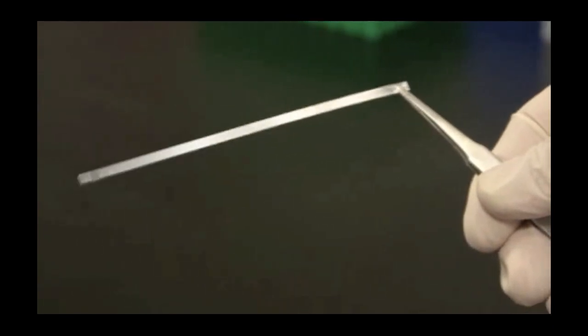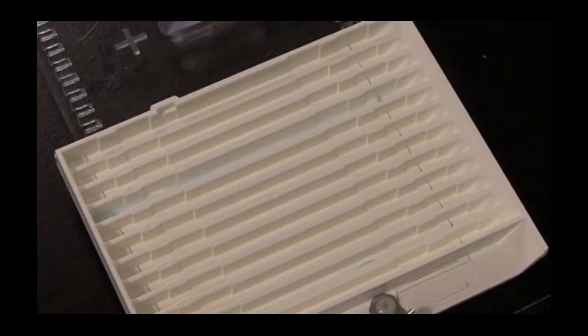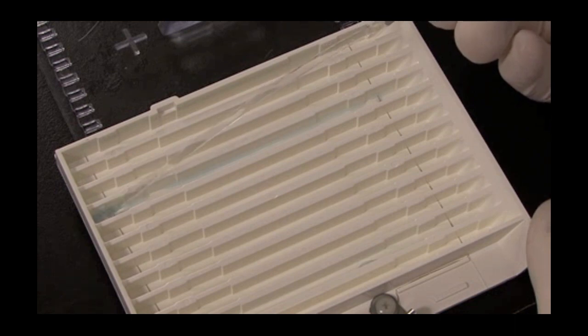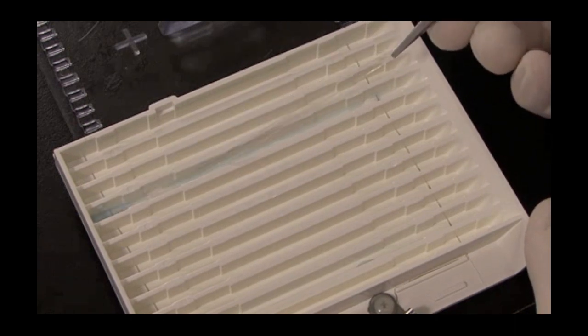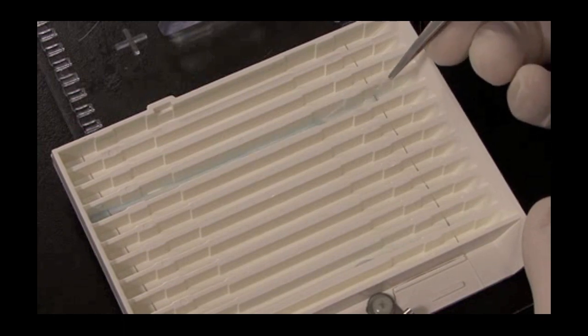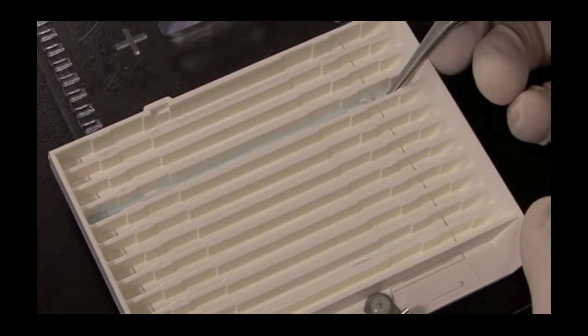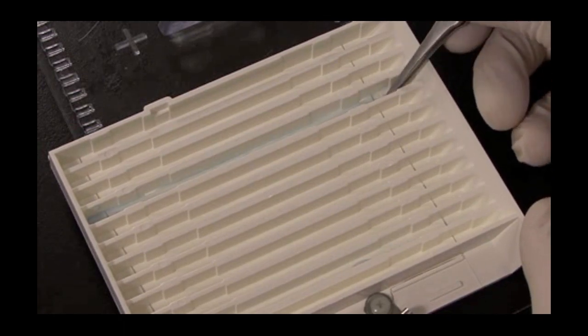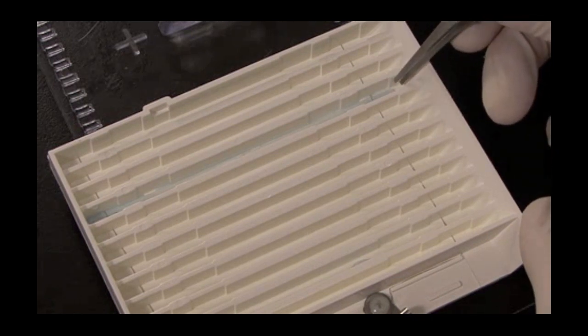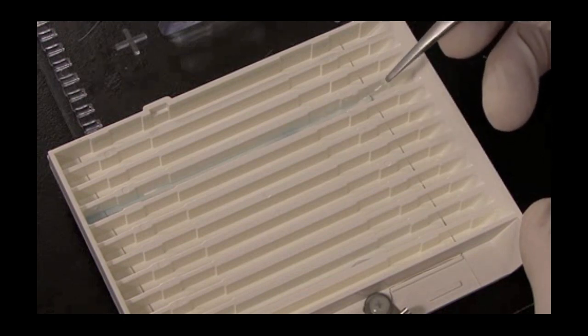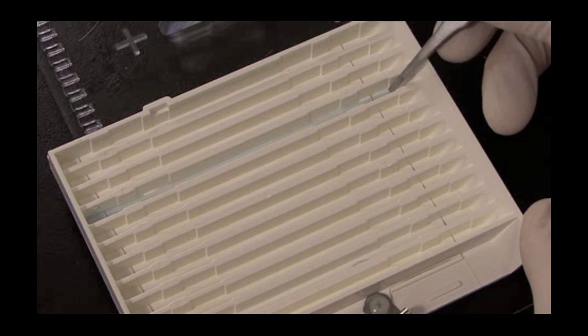To load the IPG strip into the focusing tray, place the positive end of the IPG strip into the positive electrode of the focusing tray, and slowly drop your IPG strip into the lane of the focusing tray. Being very careful not to trap any air bubbles. If there are any air bubbles trapped, you can pick up the end and gently reposition the IPG strip until the air bubbles are expelled.